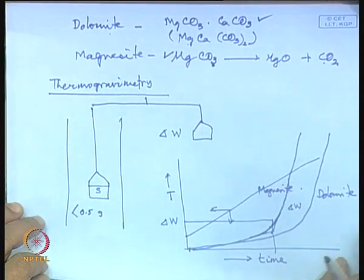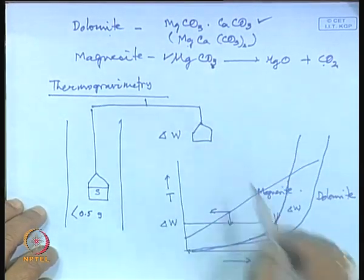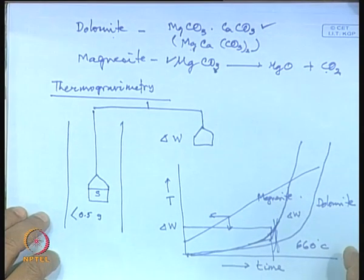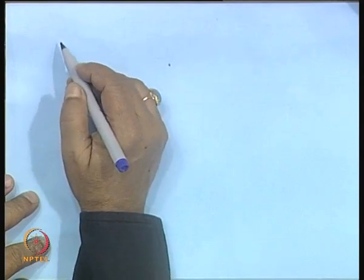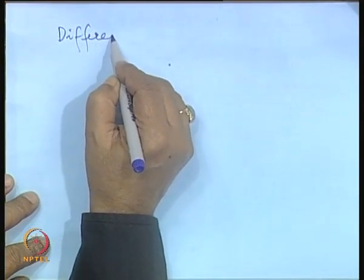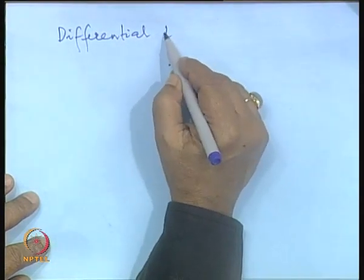Generally, the decomposition temperature of MgCO₃ is around 660°C. There is another way in the laboratory to find out the decomposition temperature, and that is differential thermal analysis.